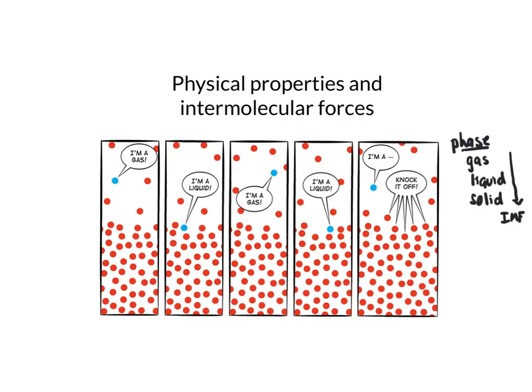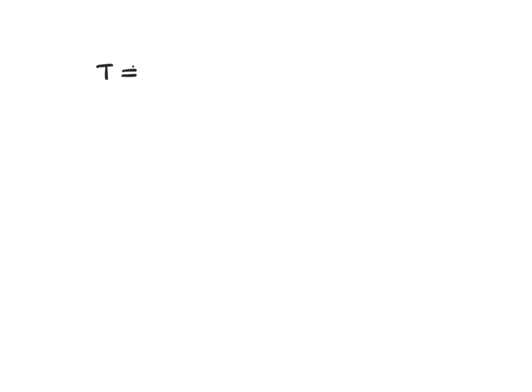So there are changes of state, and those changes of state will depend on the temperature of those systems. Recall that temperature is a measure of the amount of kinetic energy that a molecule has — it relates to the average kinetic energy of the molecules in a system.